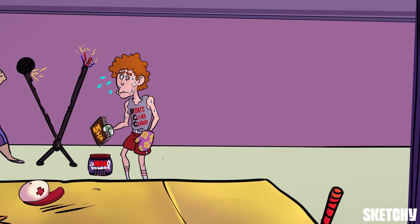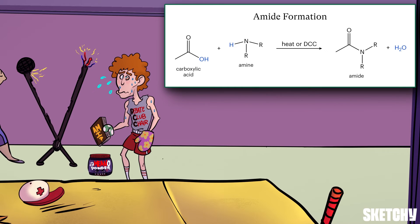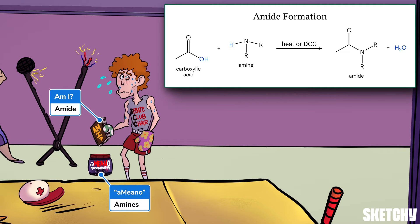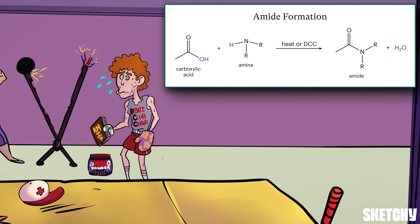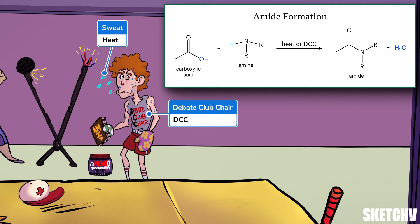The next reaction we'll look at turns carboxylic acids into amides. This boxer is reading the metaphysical treatise Ami — seems like he'll be relying on psychological warfare. Though he's not just brains; he came prepared with some amino protein powder in case his fight turns physical, which is also a reminder that an amine must be added for this reaction to work. Even so, pretty harsh conditions are needed to prepare amides, because the amine reagent will first deprotonate the carboxylic acid, making it less reactive. One way to overcome this is to add heat. As an alternative, a special activating reagent called DCC can be added, symbolized by the debate club chair tank top this boxer is sporting.